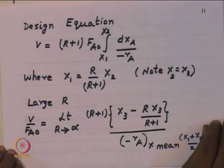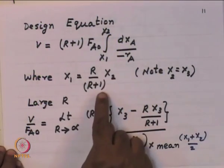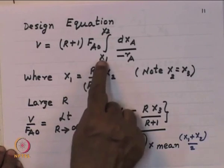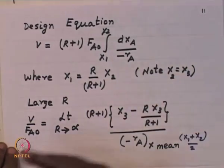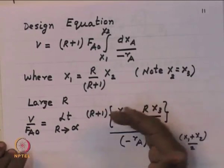When R = 0, X_1 becomes 0 and the design equation becomes that of a PFR. So when R = 0 it is a PFR, and when R → ∞ it is a CSTR. Recycle is a device that allows you to achieve any property between plug flow and mixed flow — the recycle ratio R is the parameter that controls this transition.